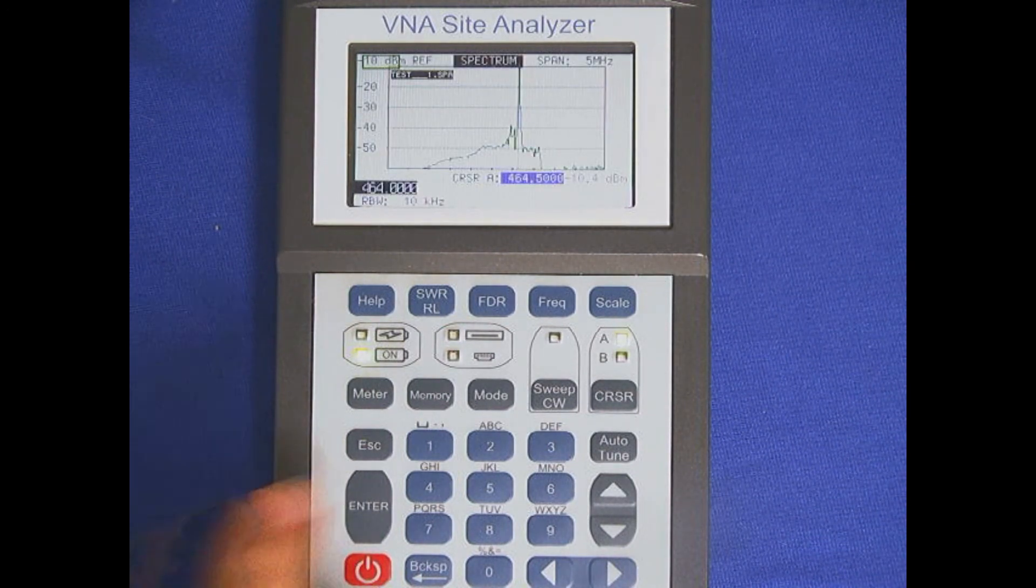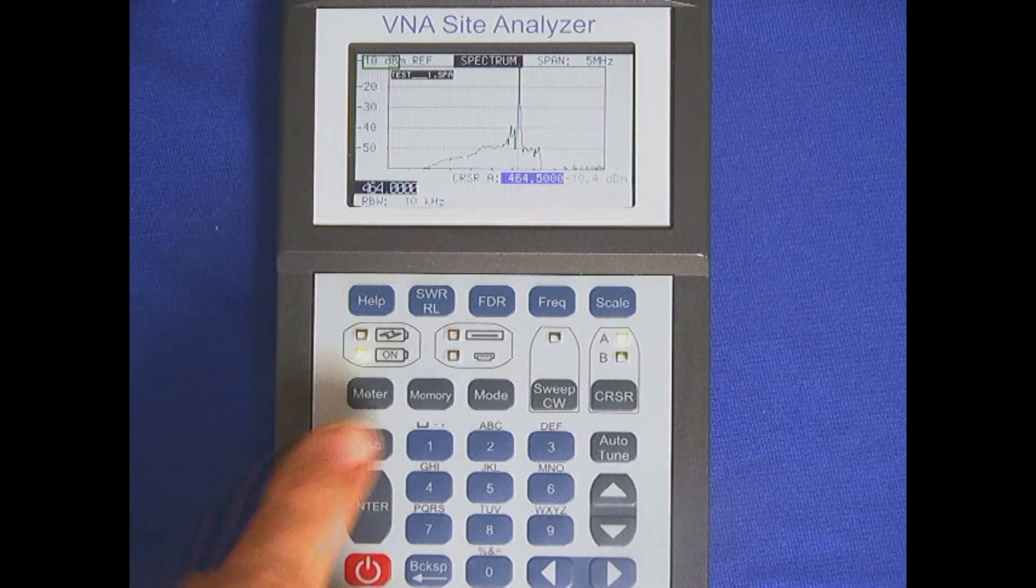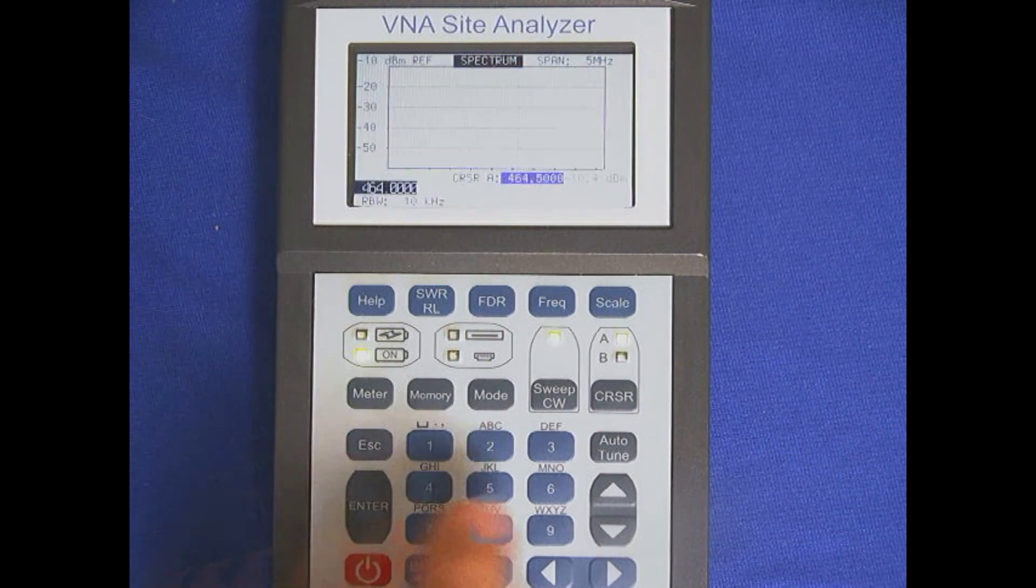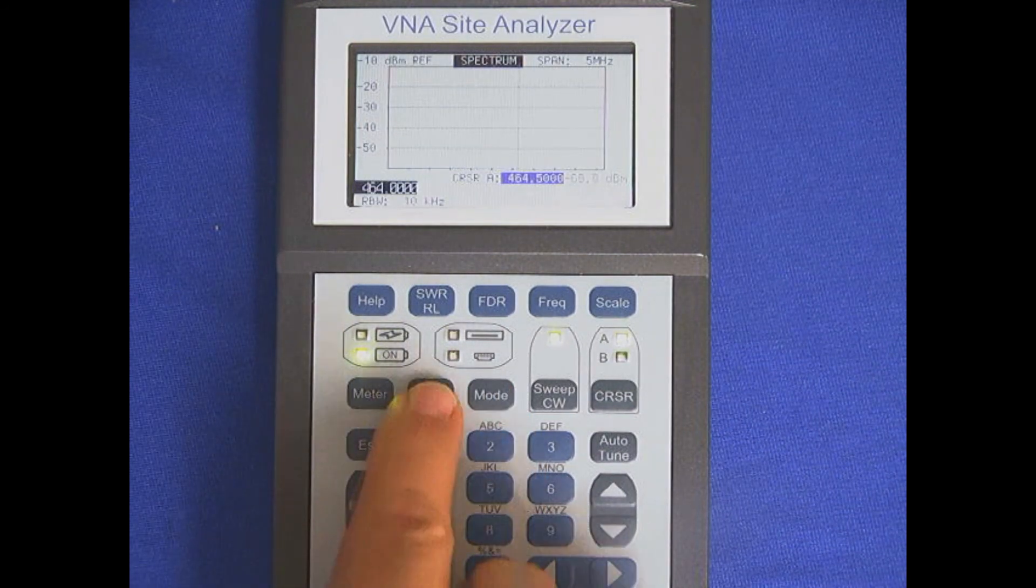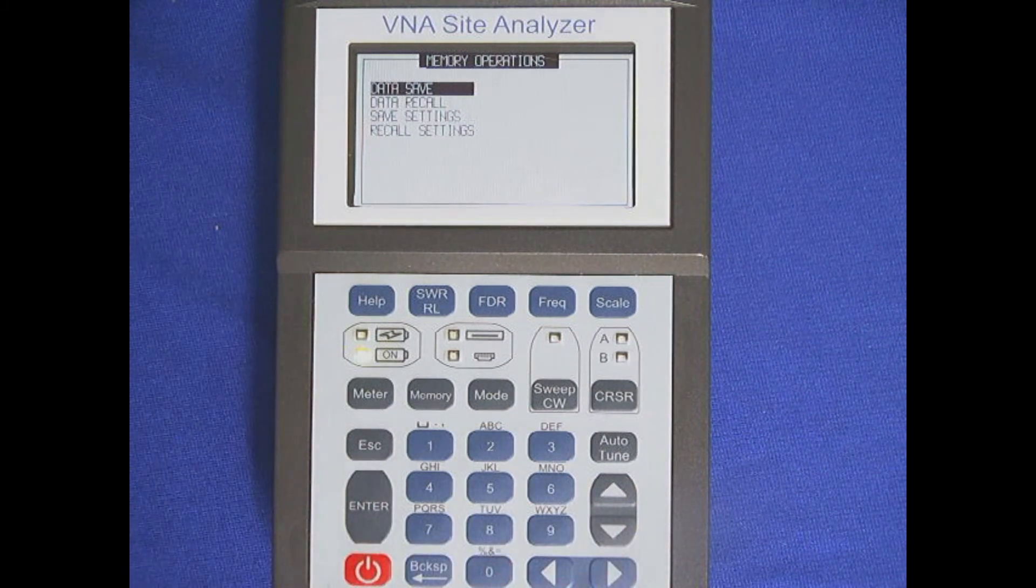I can also save my setups the same way here in memory. Can't do it from the test page. Got to escape. I can save my setup by hitting memory and then selecting Save Settings and naming the settings. This would be a spectrum analyzer in the UHF 460 range.